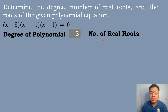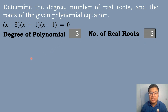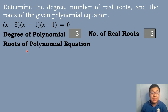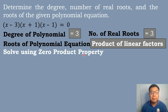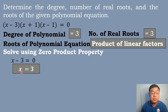We will find the number of real roots. According to the theorem, the value of the degree of the polynomial is also the value of the real roots. So if the degree of polynomial is equal to 3, then the number of real roots is also equal to 3. We will get the roots using zero product property, equating each factor to zero. So x − 3 = 0, and x = 3.